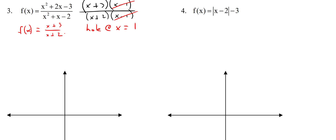We need a vertical asymptote: set x + 2 = 0, so x = -2. That's the vertical asymptote. Then the horizontal asymptote: since the degree is the same on top and bottom, we take the leading coefficients — it's 1/1, so y = 1. Again, do not forget to say y = 1 or x = -2 — giving just a number like 'five' doesn't make sense. You have to give me an equation.